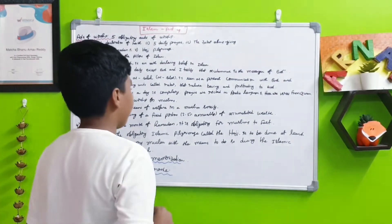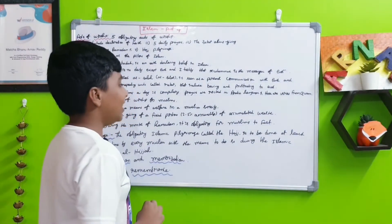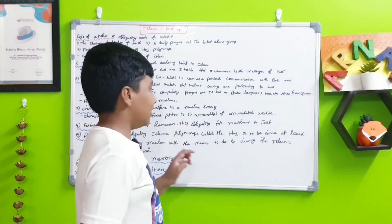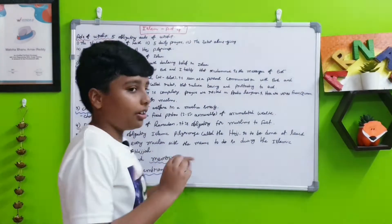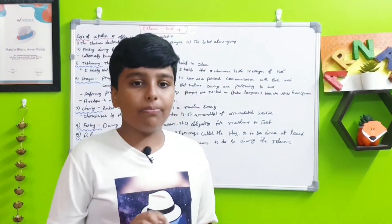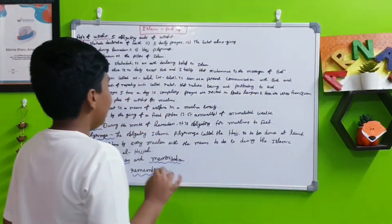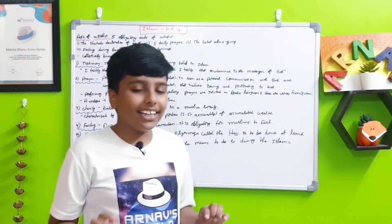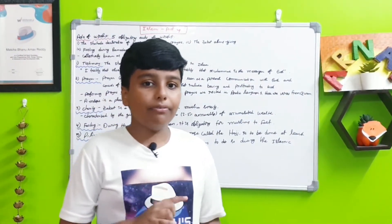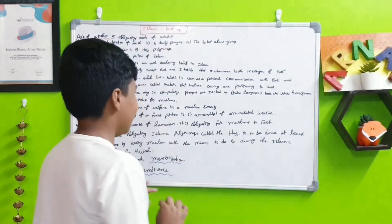It is characterized by the giving of a fixed portion, which is 2.5% of their annual accumulated wealth. So 2.5% of wealth should be given to poor people, to charity annually. That means 1/40th of their wealth.